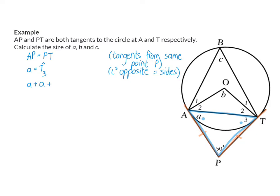Angle A plus angle T3 (also size A) plus angle P (50°) must add up to 180° — interior angles of a triangle. So 2A equals 130°, which means angle A equals 65°.